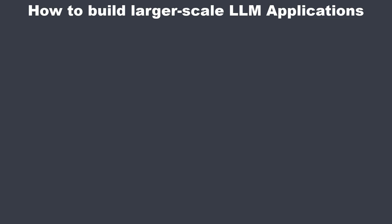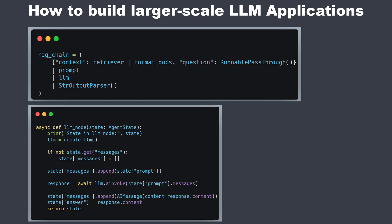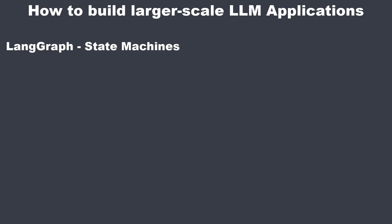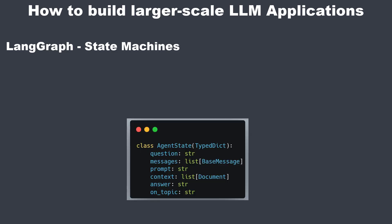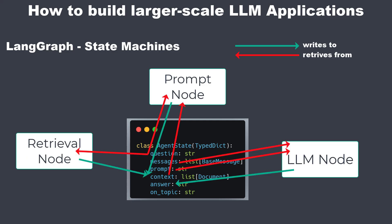Hi everyone. Last week I explained why I don't like LangChain for more complex applications too much and why I recommend switching to LangGraph. LangGraph allows you to use a state machine pattern where you define a central state and each logical part, which is a node in LangGraph, just uses the state it needs. This decouples your logic, making it more modular and maintainable.